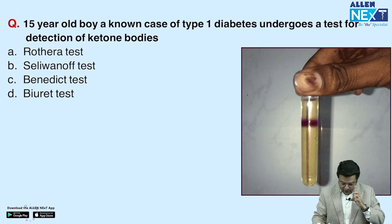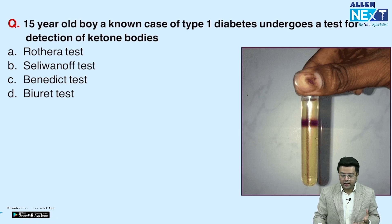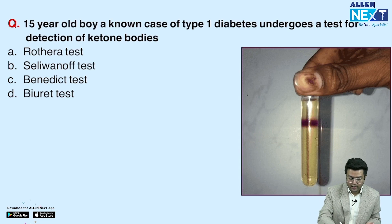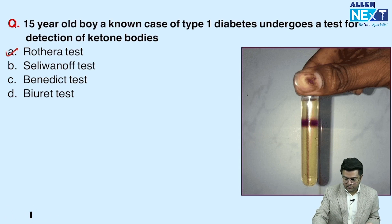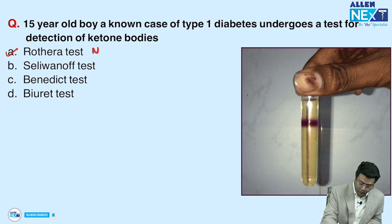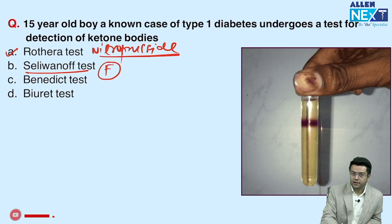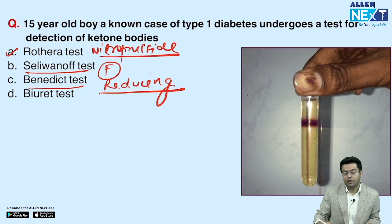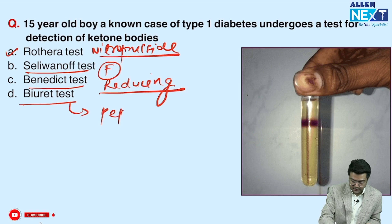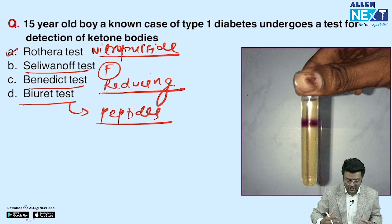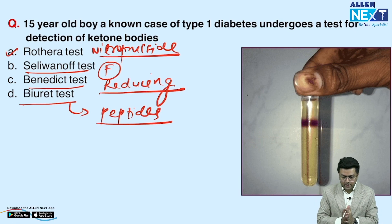Next question: a 15-year-old boy, known case of type 1 diabetes — which test is used for ketone bodies? The answer is Rothera's test, also known as the nitroprusside test, which gives a purple ring. Talivanov's test is used for fructose. Benedict's test can detect reducing substances in urine including glucose and other sugars. Biuret test is for peptides or proteins.